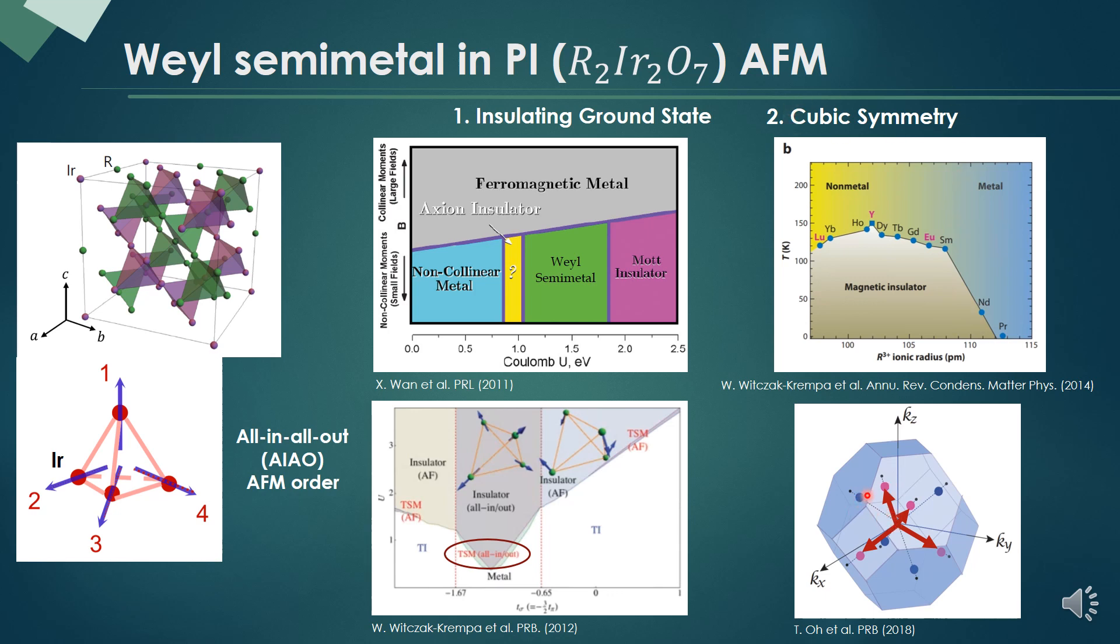The feature of Weyl semimetal is to have anomalous Hall effect. However, the anomalous Hall conductivity is suppressed when the cubic symmetry exists. Therefore, although the Weyl semimetal exists in the system, we cannot detect the signal easily.